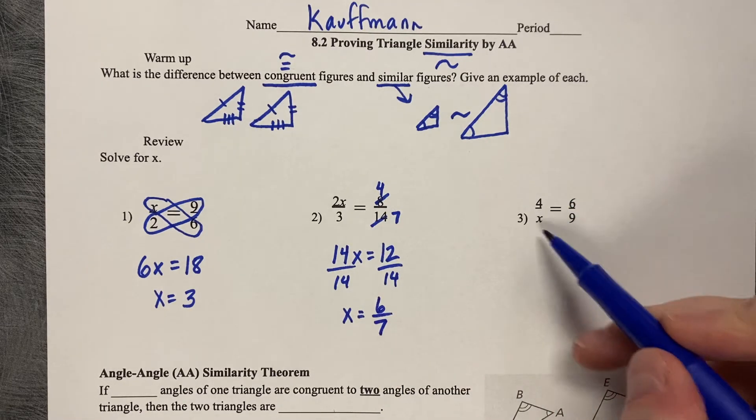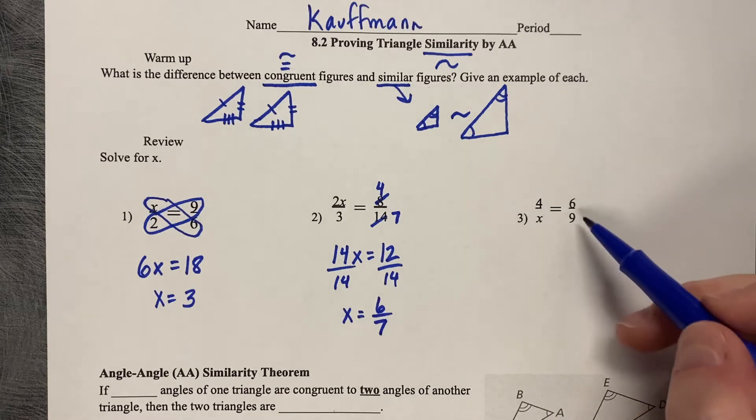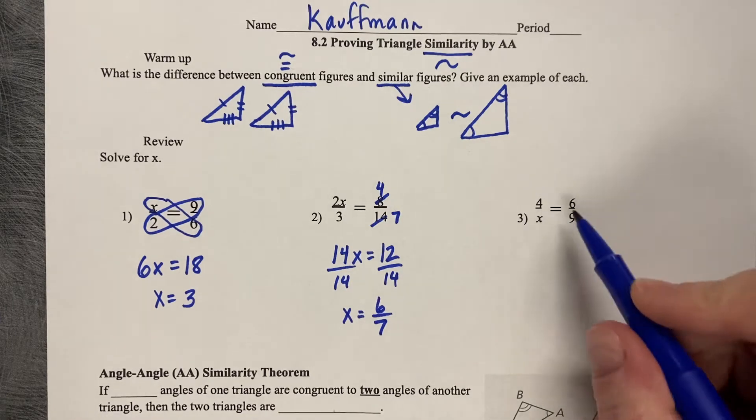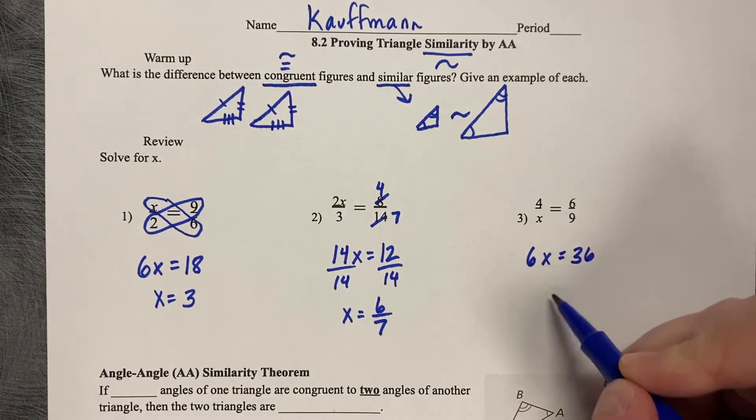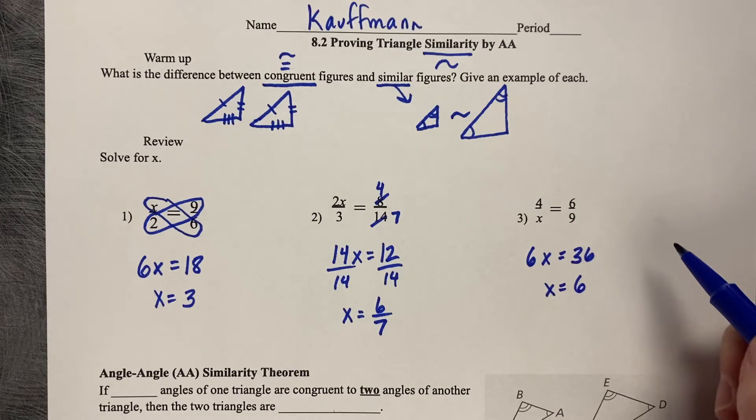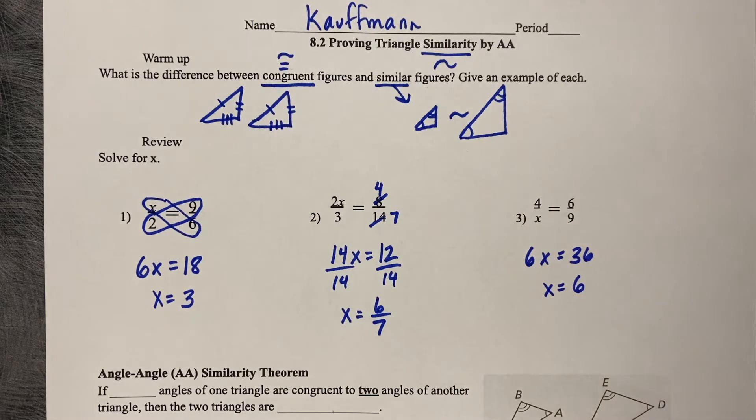You try this one, try it either method you want. You can reduce, or you can just cross multiply. I'll just cross multiply. 6x equals 36, divide by 6, and x equals 6. Even if you reduce, you should still get x equal to 6.